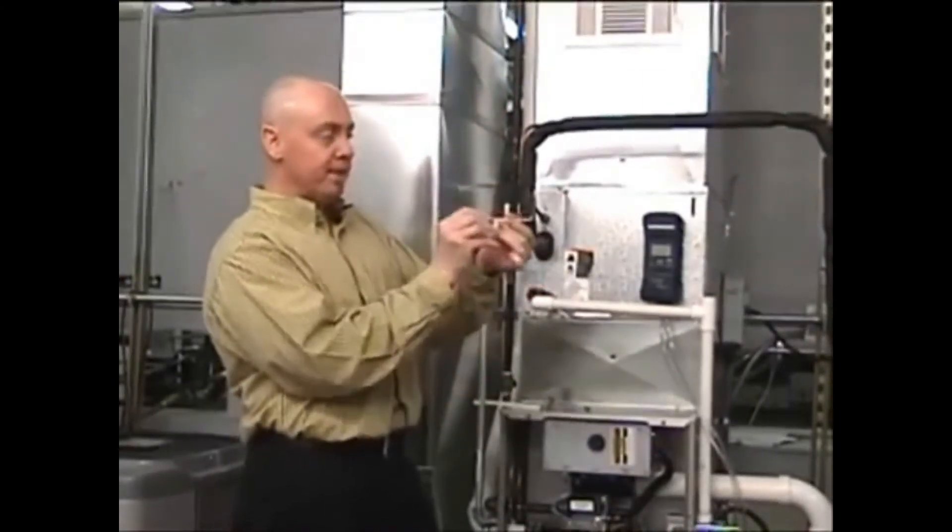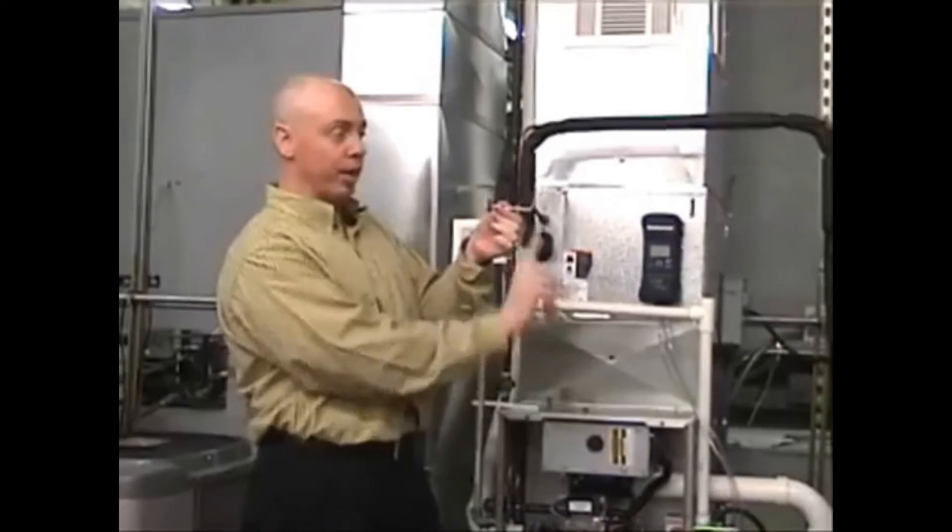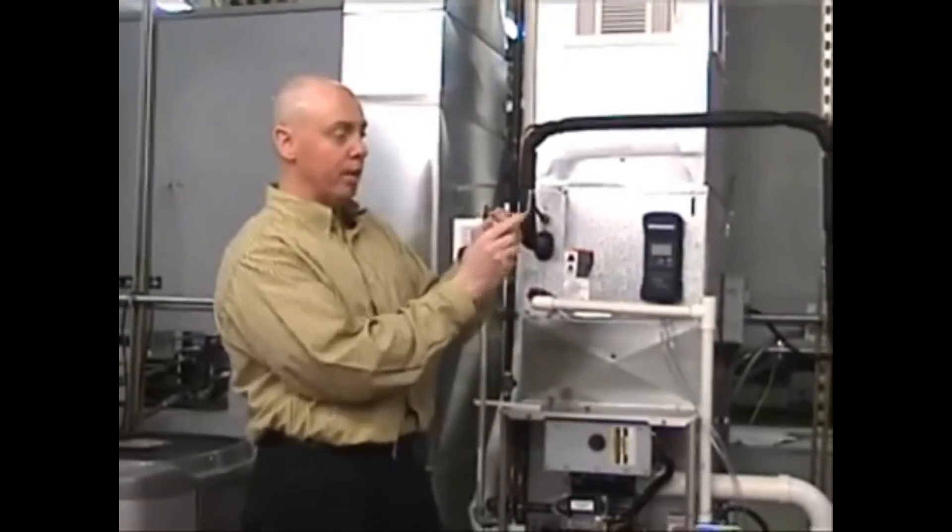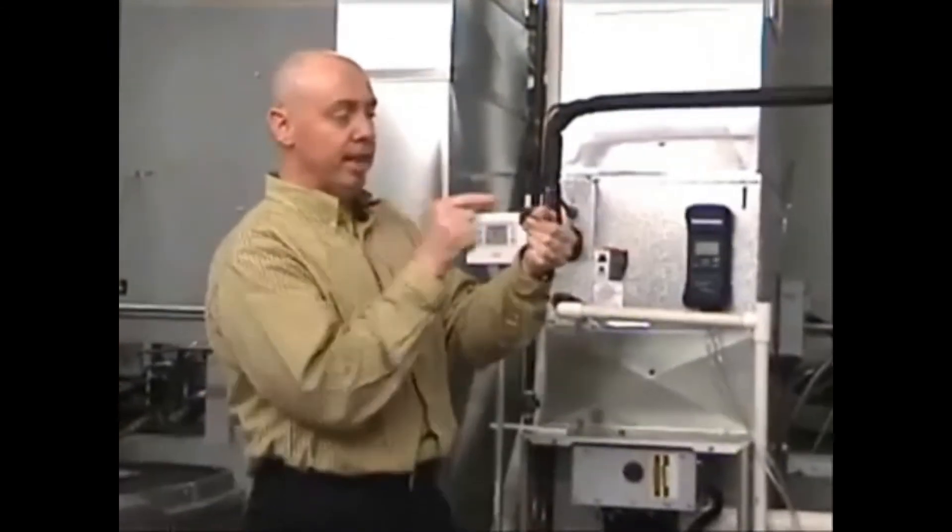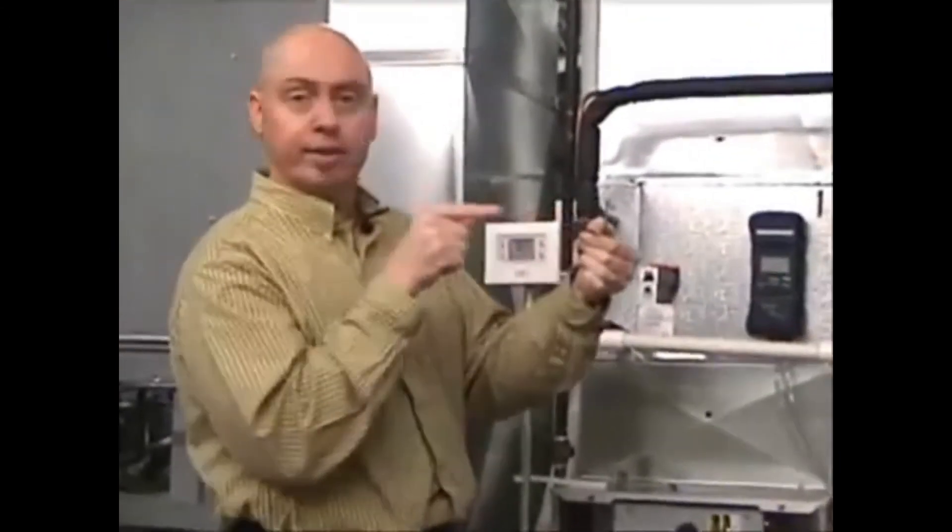When you put this into the ductwork and your supplied air is going this way, you point it in the direction of the airflow, and you will see that the sensing probes are 90 degrees to the airflow. Airflow is going this way, inlet sensing probe is 90 degrees to the airflow.